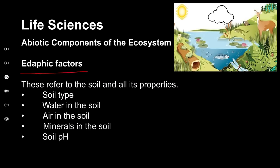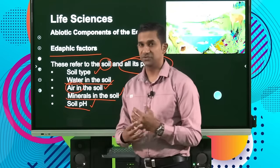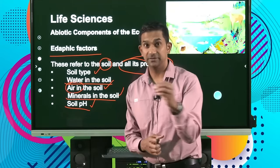When we talk of the edaphic factors, we refer to those factors in the soil and all its properties — the type of soil, the water content in the soil, its ability to hold water, the air available in the soil for the growth of plants and the sustaining of other life forms, the minerals in the soil, as well as the pH of the soil. These are the edaphic factors — factors resulting from the type of soil, the amount of nutrients, and pH — and these in turn also influence the living forms.